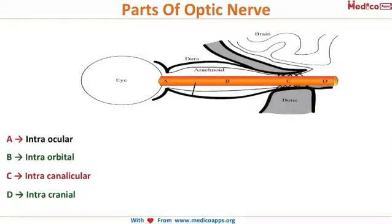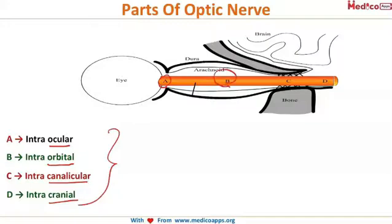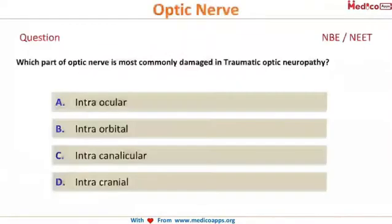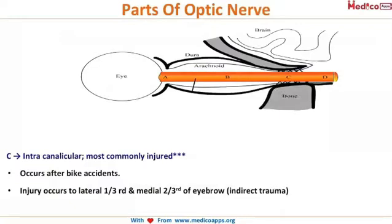The optic nerve is divided into four parts: intraocular, intraorbital, intracanalicular, and intracranial. Regarding traumatic optic neuropathy, the most commonly injured part is the intracanalicular segment. This injury typically occurs after bike accidents.